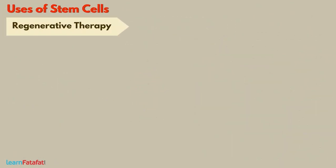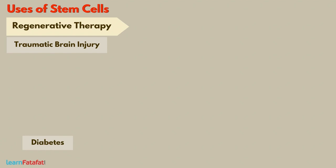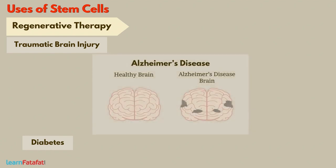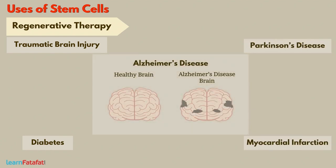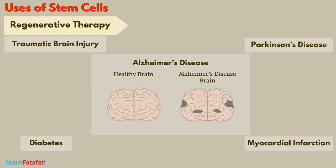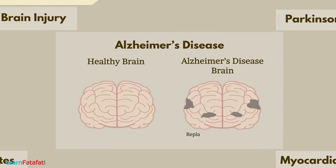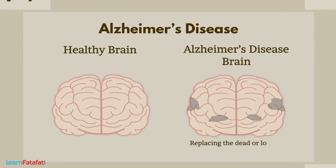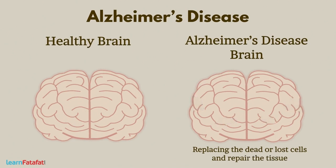Here are the uses of stem cells. Regenerative Therapy: In cases of situations like traumatic brain injury, diabetes, Alzheimer's disease, Parkinson's disease, myocardial infarction, etc., stem cells are used to replace dead or lost cells and repair the tissue.